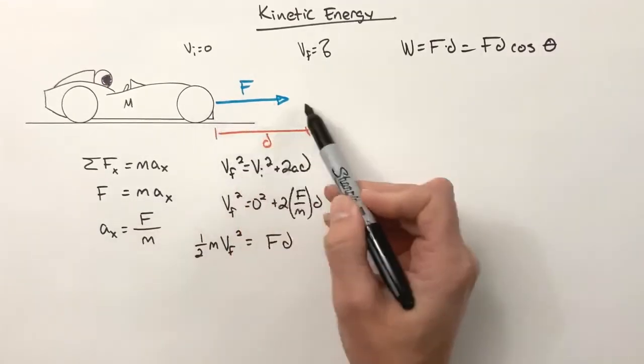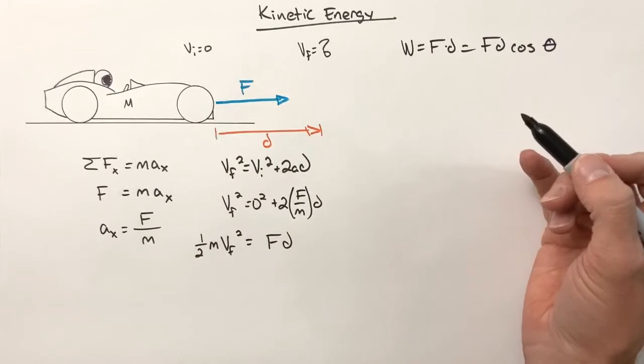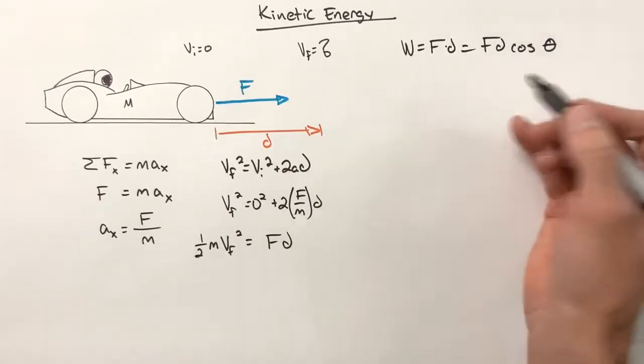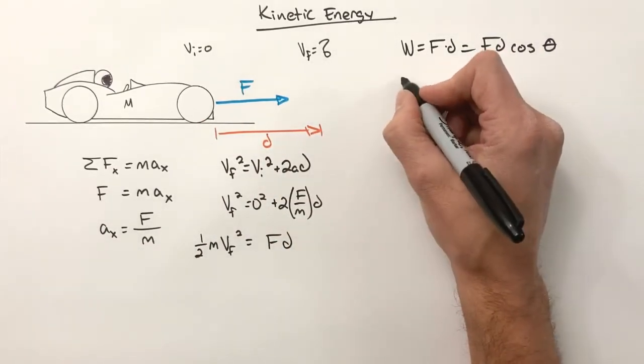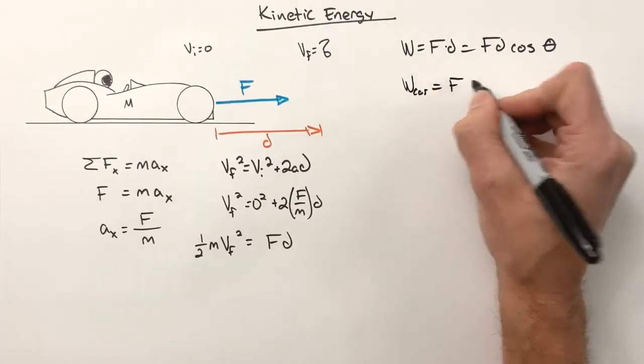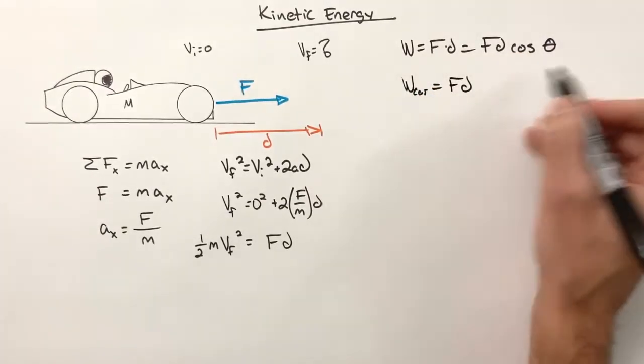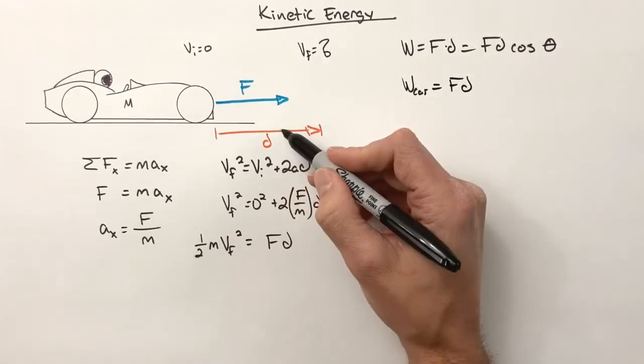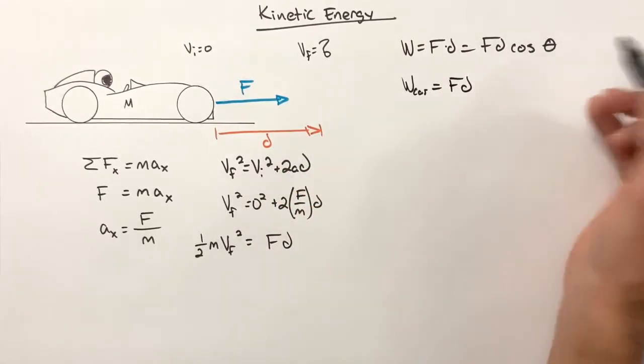So here we have a force forward and a displacement forward. So in this case, this force forward causing this car to accelerate is going to do some work over this displacement. So the work done on the car is going to be F times d. There's no cosine term because these are parallel to each other. The cosine of zero is one.